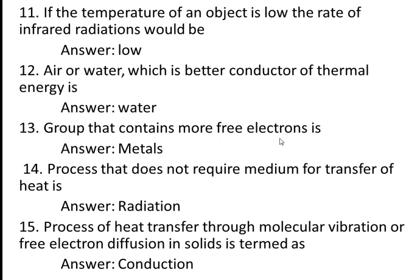Thirteenth question: which group contains more free electrons? Answer is metal. There are three kinds: metals, non-metals, and semiconductors. Non-metals do not contain free electrons. Semiconductors will conduct heat at very high temperatures, but metals contain the most free electrons.